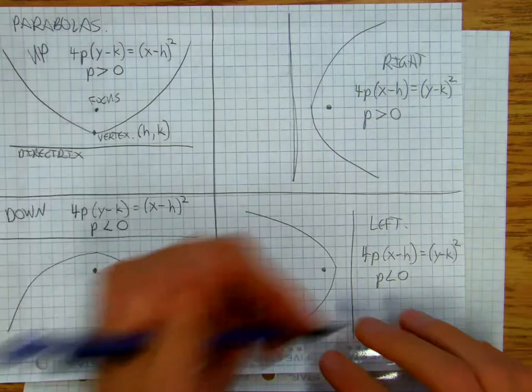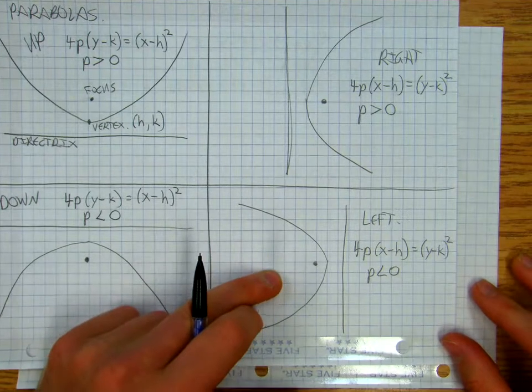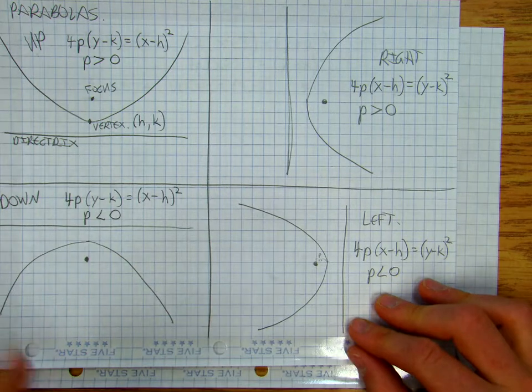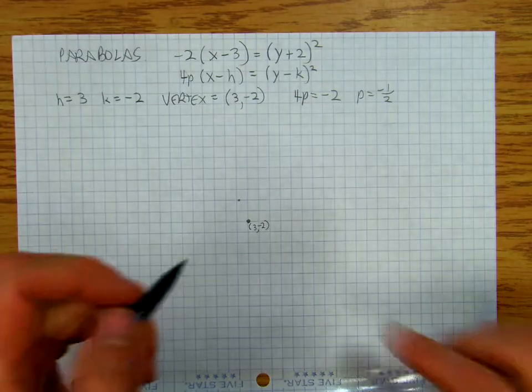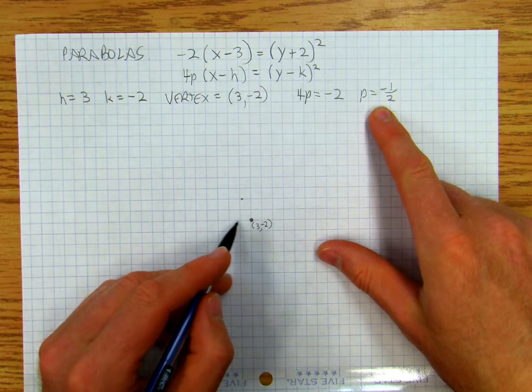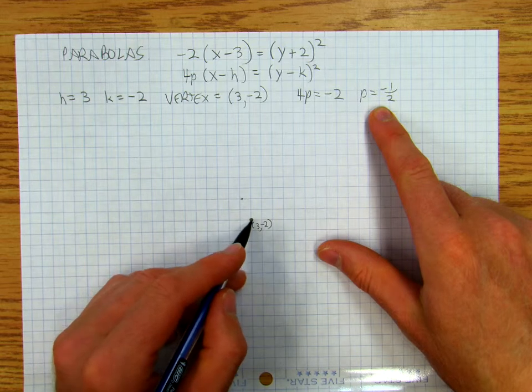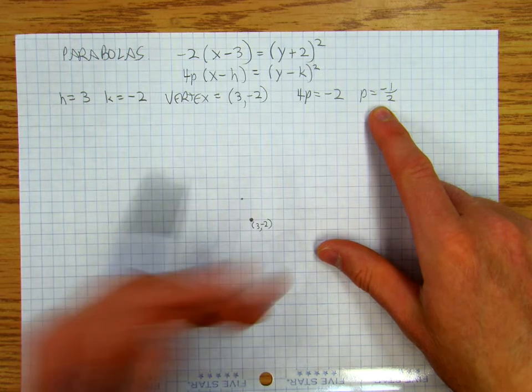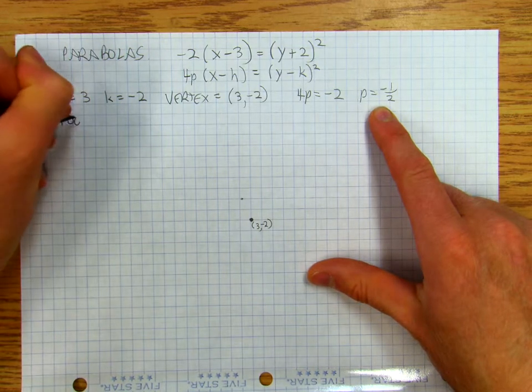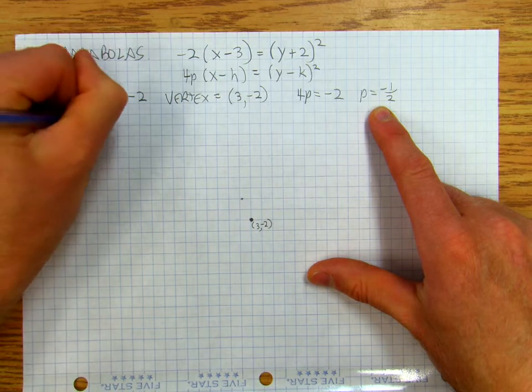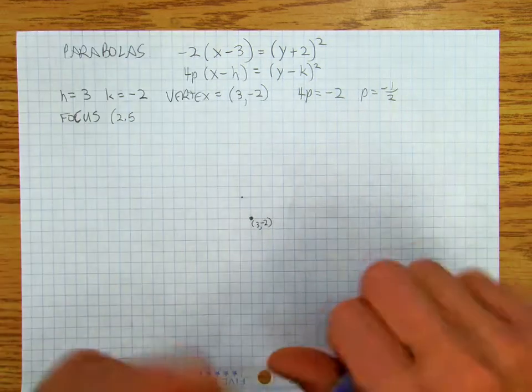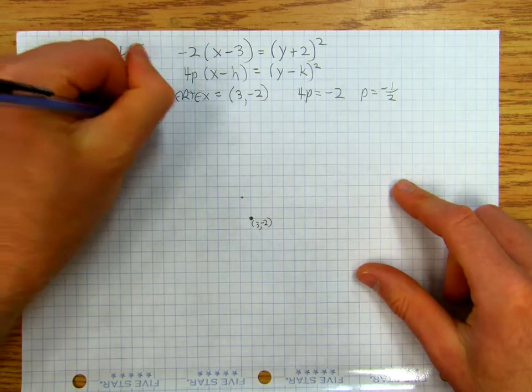Now, I know that I'm looking at this situation here, so this is my p. So I know that this means that my focus has got to be 1 half in this direction, or it's negative 1 half. So I'm going to go to 2.5, so my focus is going to have coordinates of 2.5, negative 2.